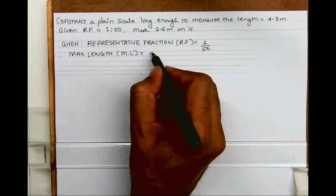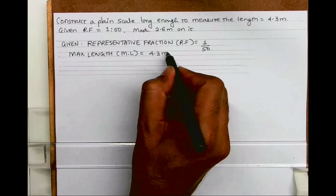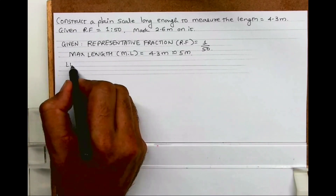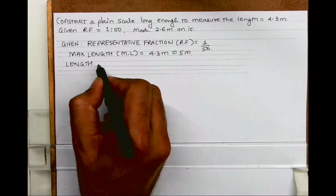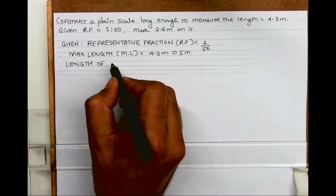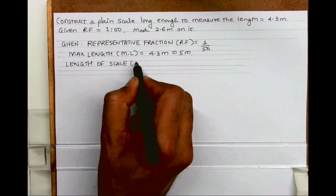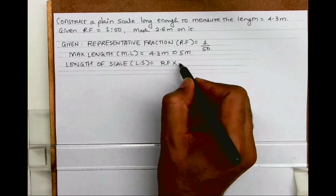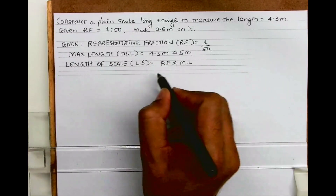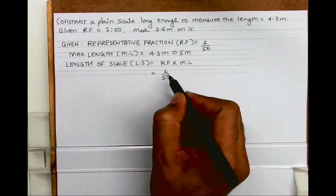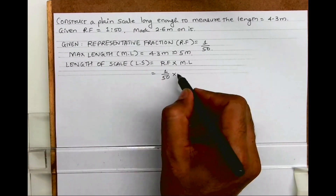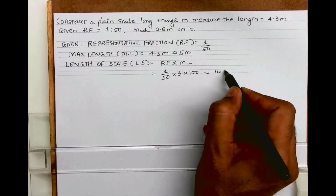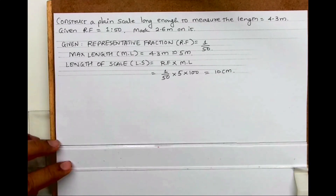We will round off the maximum length to 5 meters. The length of scale is equal to RF multiplied by maximum length, so that is 1 upon 50 into 5 meters into 100, which gives 10 centimeters.